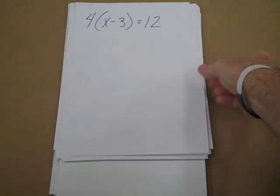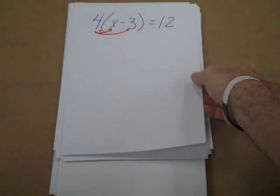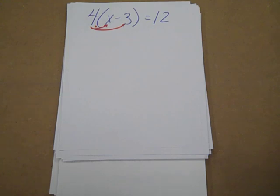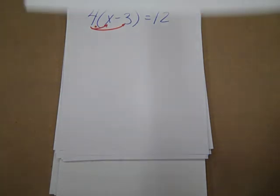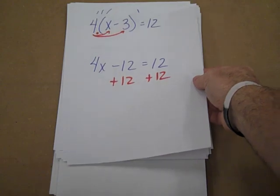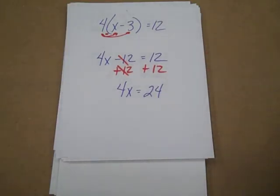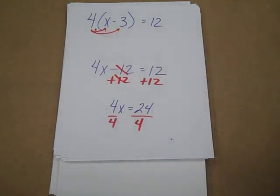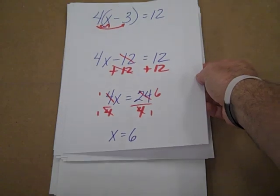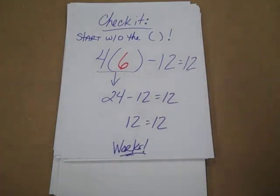So we throw some parentheses at you — maybe a distributive property. We're going to distribute the 4 throughout the parentheses, get rid of our parentheses, and then just start the process of simplifying the equation. We're going to add 12 to both sides. Reduce the left side, bring down what's left. Combine the right-hand side. We're going to get rid of the 4 by division — divide each side by 4. Reduce it down. Our last thing is we're going to check it.